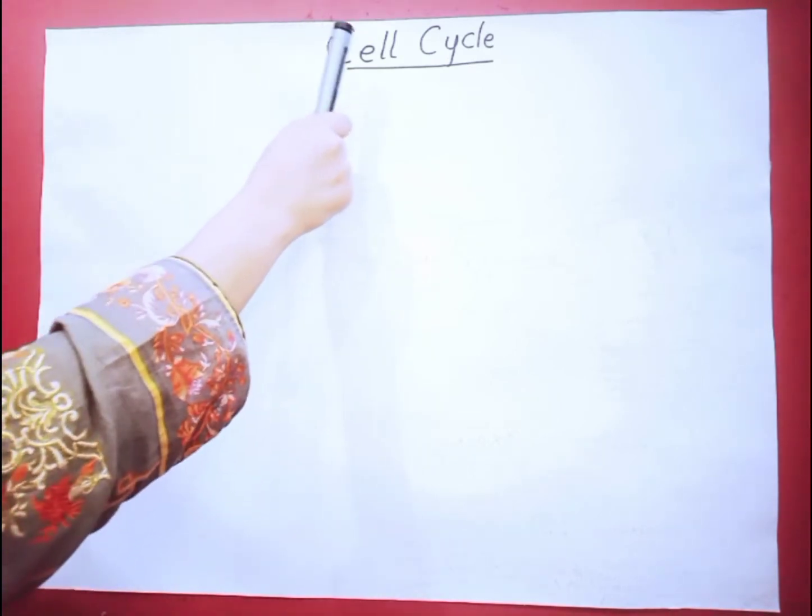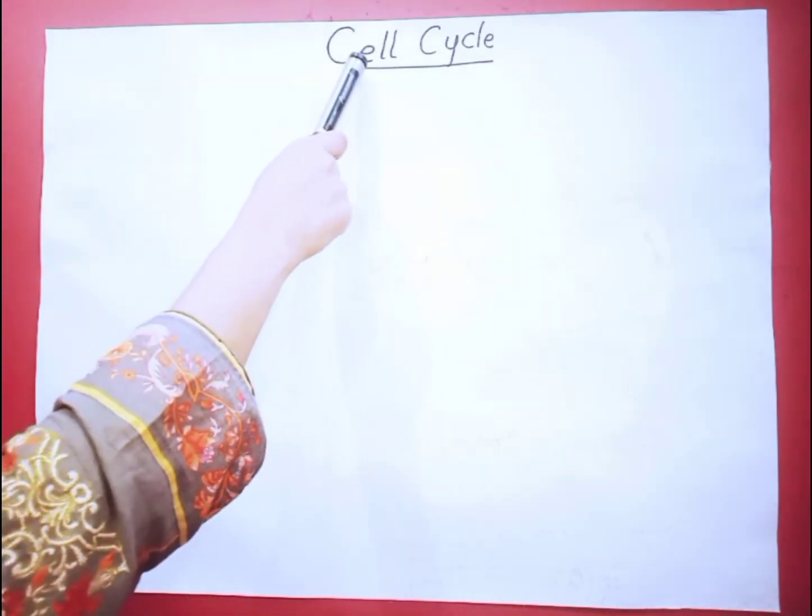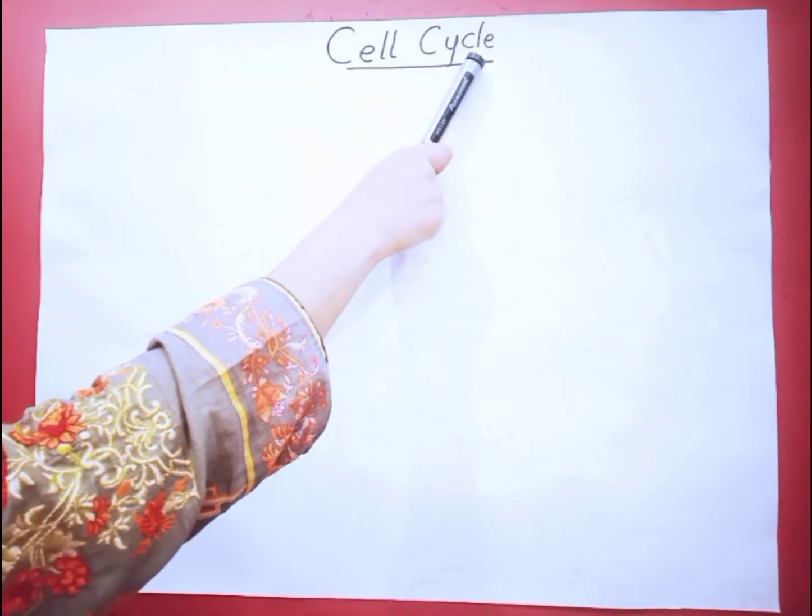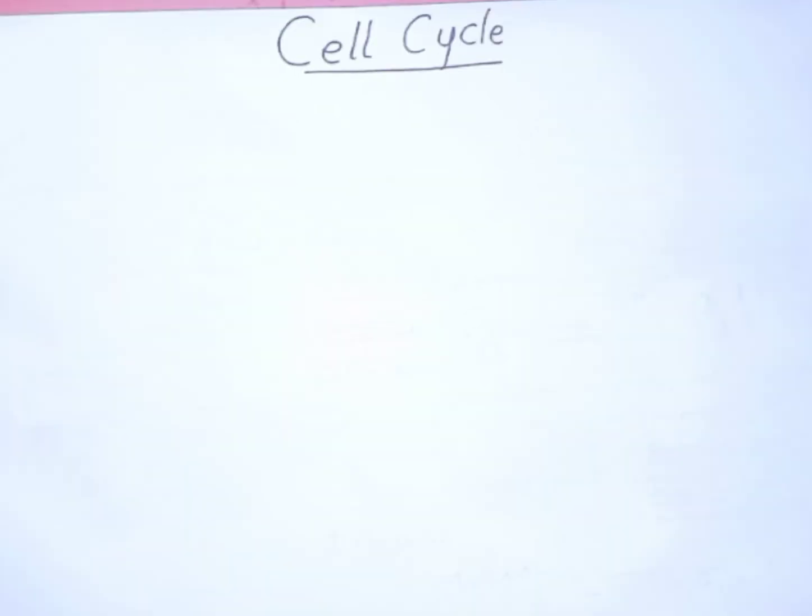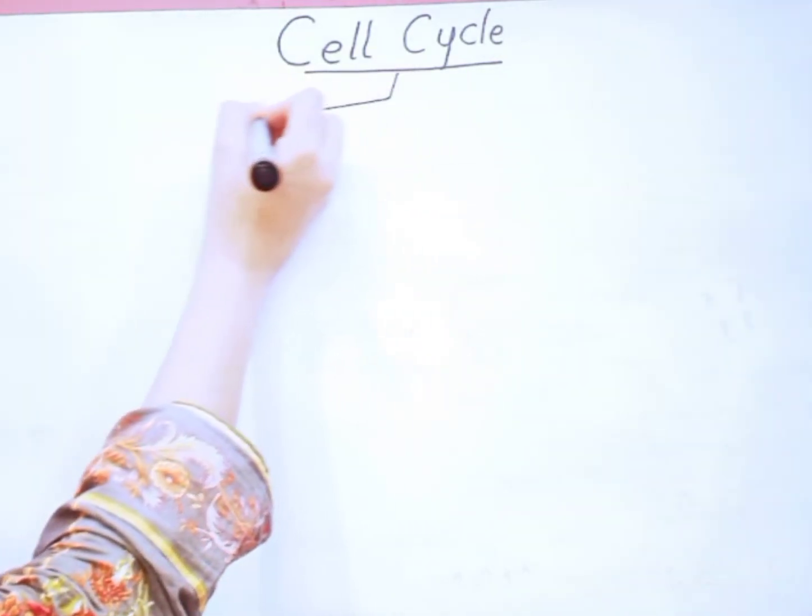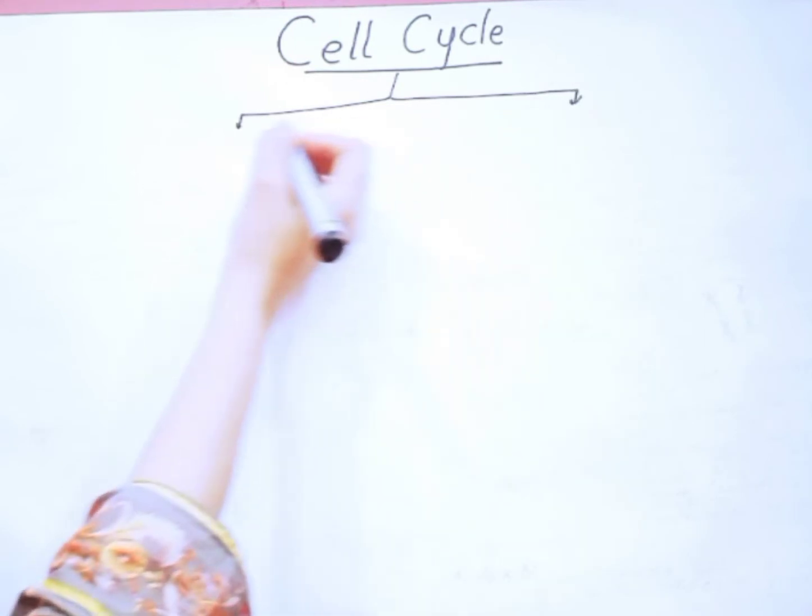Today we have another important topic which is the cell cycle or cell division cycle. This cell cycle is a series of events that take place in a cell for its growth and development. It is a life cycle of a cell or replication and reproduction of cells. We have two types of cell divisions, either through mitosis or through meiosis.